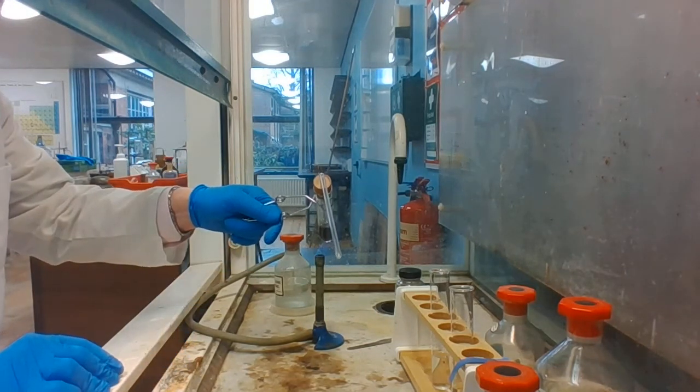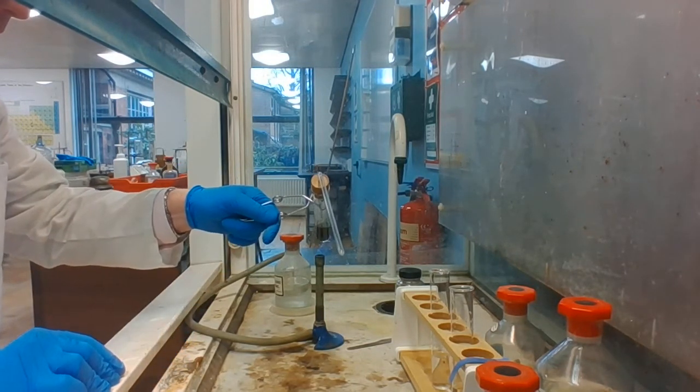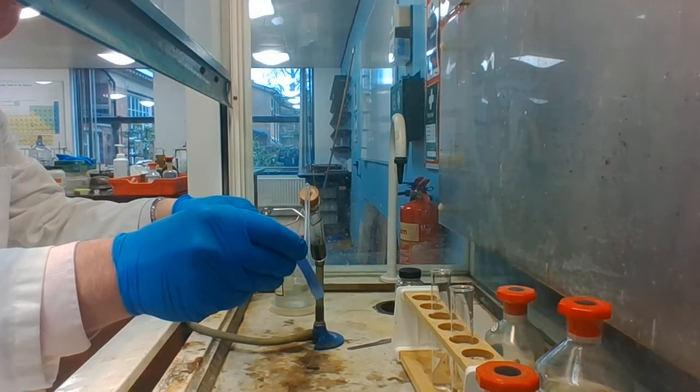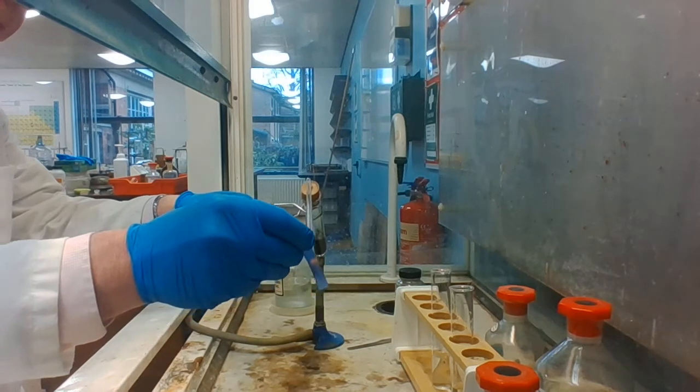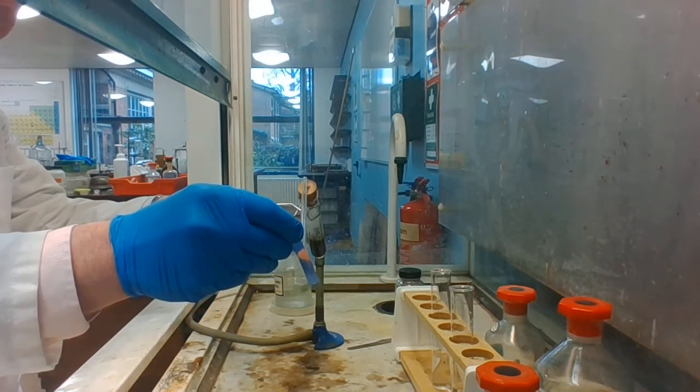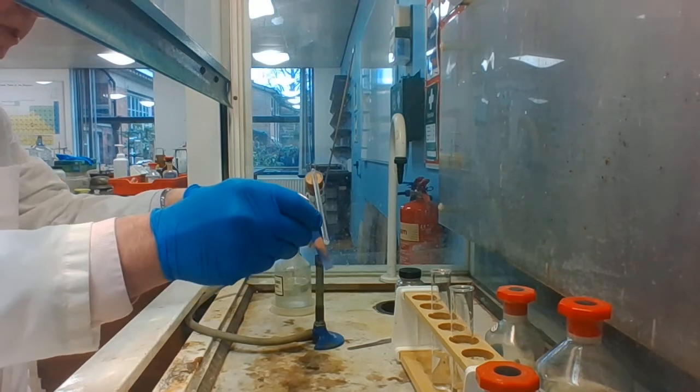And we can test to see if chlorine gas is being produced by seeing if it bleaches some damp litmus paper. I'm going to see it's already going red, so I think there's some chlorine gas coming through.